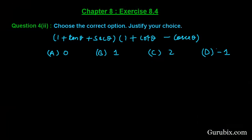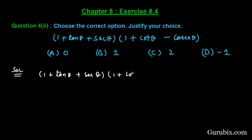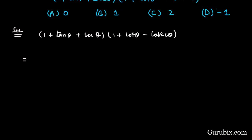Welcome friends, let us solve the second part of question number 4 of Exercise 8.4 of Chapter 8. The question says: choose the correct option and justify your choice. We have (1 + tan θ + sec θ) times (1 + cot θ - cosec θ).